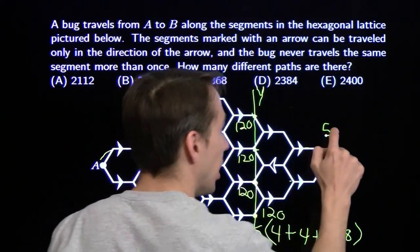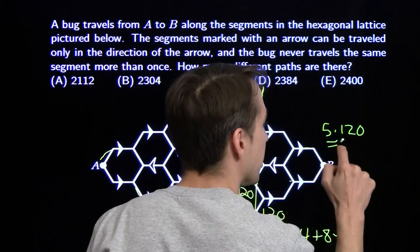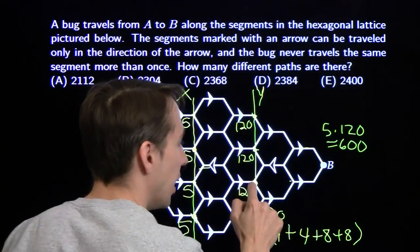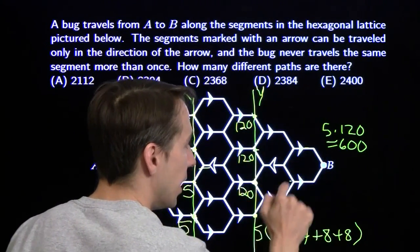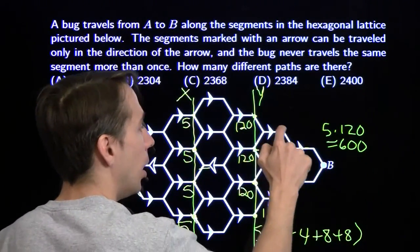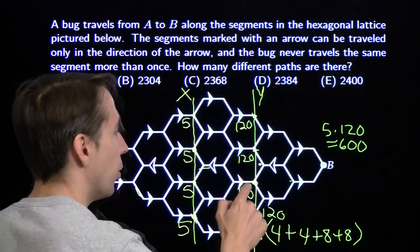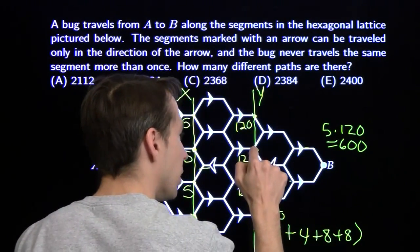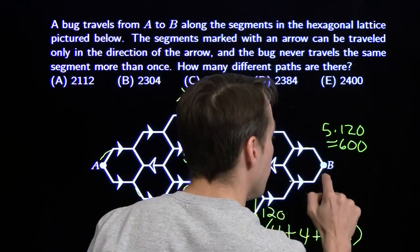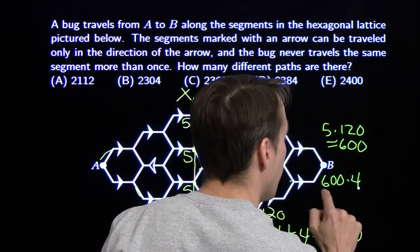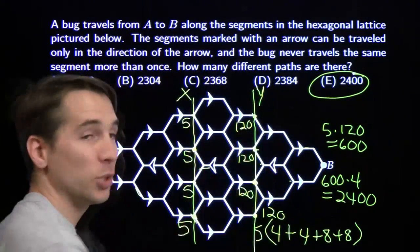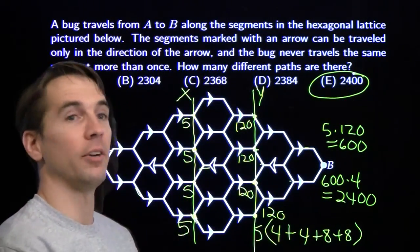So that's five times 120 ways to finish from each Y point, which is 600 from each point. The same reasoning gives 600 from each of the other Y points as well — they're symmetric. So the total number of ways to get from A to B is 600 times 4, which is 2,400. And since 2,400 is also the largest of our answer choices, we can be extra confident we're done.